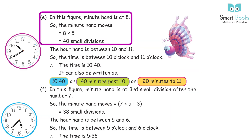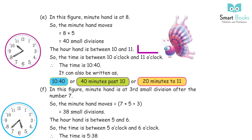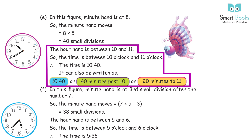E: In this figure, the minute hand is at 8. So the minute hand has moved 8 × 5 = 40 small divisions. The hour hand is between 10 and 11. So the time is between 10 o'clock and 11 o'clock. The time is 10:40. It can also be written as 10:40, 40 minutes past 10, or 20 minutes to 11.